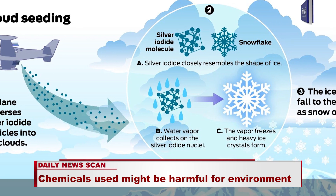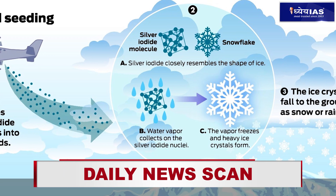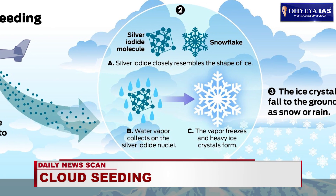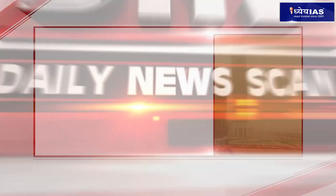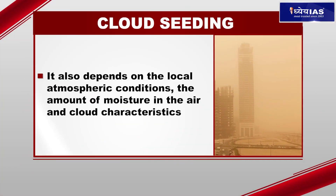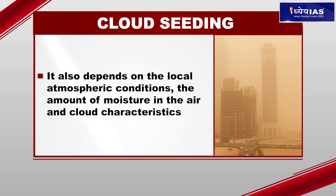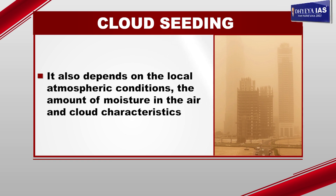The experiments have been done in areas around Nagpur, Sholapur, Hyderabad, Ahmedabad, Jodhpur, and recently in Varanasi. If we look at the success rate of these experiments in inducing rain, it is about 60 to 70%. It also depends on the local atmospheric conditions, the amount of moisture in the air, and cloud characteristics.